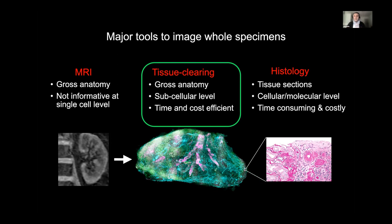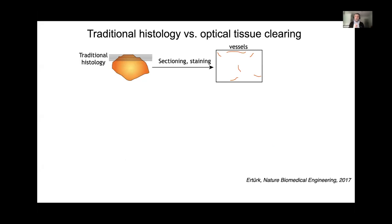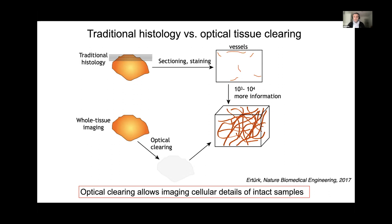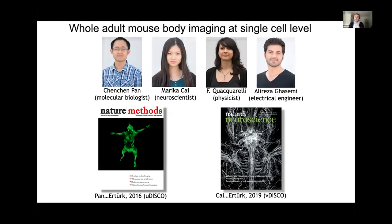Our technology — so-called tissue clearing — combines both approaches: we can look at a whole organ like a human kidney at cellular and even subcellular level. Optical tissue clearing converts opaque biological tissue into transparent structures — you can think of it as converting milk into water. We can then see through and scan through to obtain cell-level details as well as networks of vessels and nerves in whole organ systems.